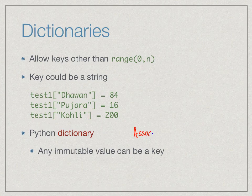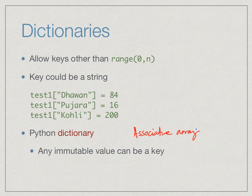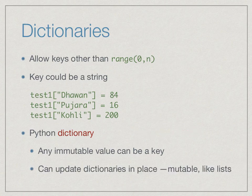This is what Python calls a dictionary — in some other programming languages it is also called an associative array. It is a store of values accessed through a key that is not just a position but some arbitrary index. Python's rule is that any immutable value can be a key, so you can use strings, integers, floats, or tuples as keys, but you cannot use lists.